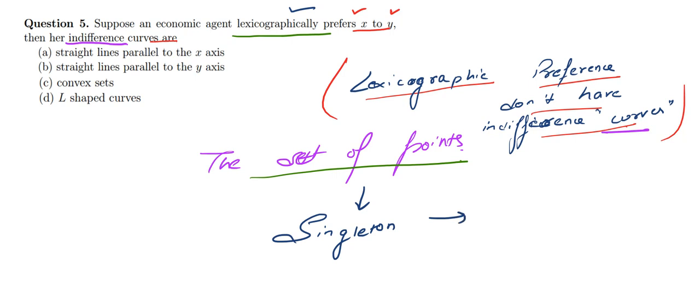A singleton is a set of points which forms a convex set. Hence our answer to this question will be convex set—option C is the correct answer to this question.